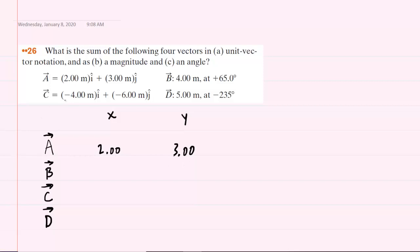Similarly, vector C is in unit vector notation. So the X component for vector C is negative four, and the Y component for vector C is negative six. So we can fill those in as well.